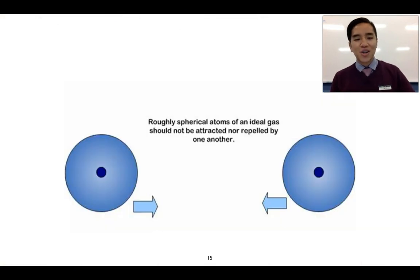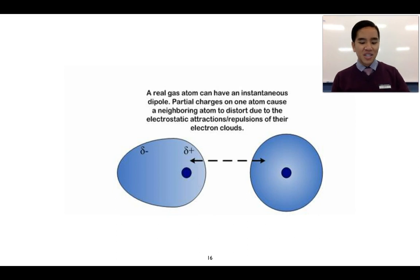So just imagine we've got two atoms here. Let's imagine that they're neon atoms. We might think normally, because they're neutral and they're not polar, that they shouldn't be attracted or repelled by one another.